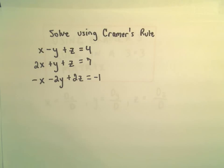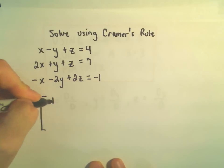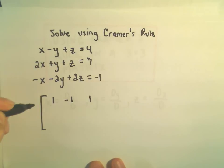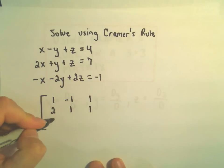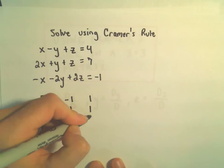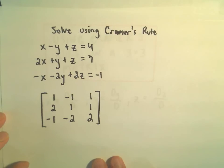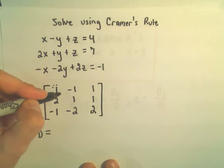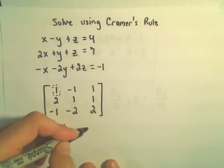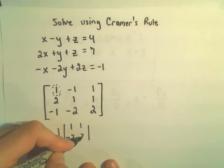The first thing I'm going to start off by doing is writing down the coefficients. So we have 1, negative 1, and positive 1; then 2, 1, and 1; and then we have negative 1, negative 2, and positive 2. I'm going to compute the determinant of this matrix by expanding along the first row. So we'll have a positive 1, and then we'll need the entries 1, 1, negative 2, and 2.